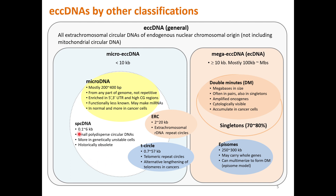The SPC DNA name is historically obsolete. For mega ECC DNA, double minutes were observed by cytological staining in many cancer cells, such as breast, lung, ovary, colon, and most notably neuroblastoma. They appear in pairs but actually more commonly appear as single units. Double minutes carry oncogenes or drug-resistant genes, and their accumulation in cancer cells leads to very poor cancer prognosis. Somewhat smaller are episomes at about 250 to 300 kilobases — they may carry full-length genes and can multimerize into double minutes, according to the episome model.